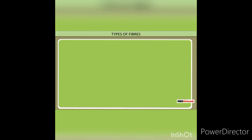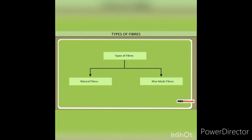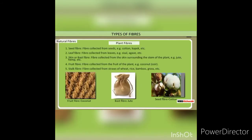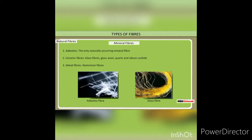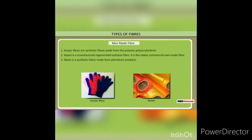Types of Fibers. There are two types of fibers: natural fibers and man-made fibers. Examples of plant fibers are coconut, jute and cotton. Examples of animal fibers are wool, silk and avian fibers. Examples of mineral fibers are asbestos and glass fibers. Examples of man-made fibers are acrylic fibers and nylon.